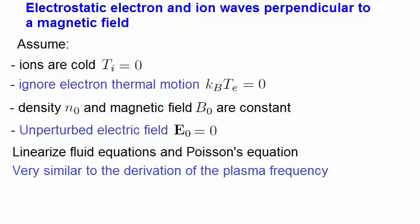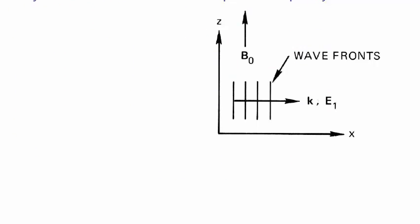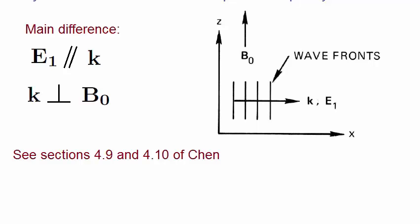Then we go through the same process that we went through to obtain expressions for the plasma frequency by linearizing the fluid equations and Poisson's equation. An image of the physics is this, where the wave front of the oscillation is in the same direction as the oscillating electric field E1, but the direction of travel is at right angles to an applied magnetic field B0.